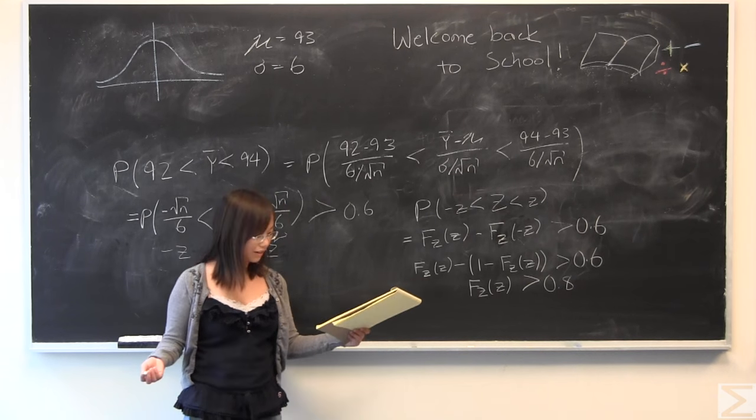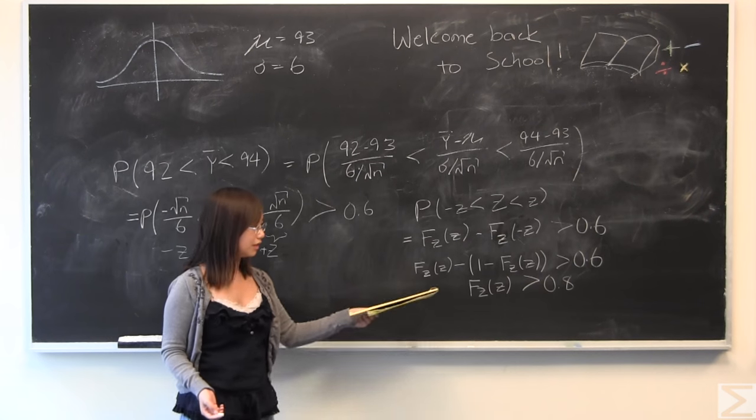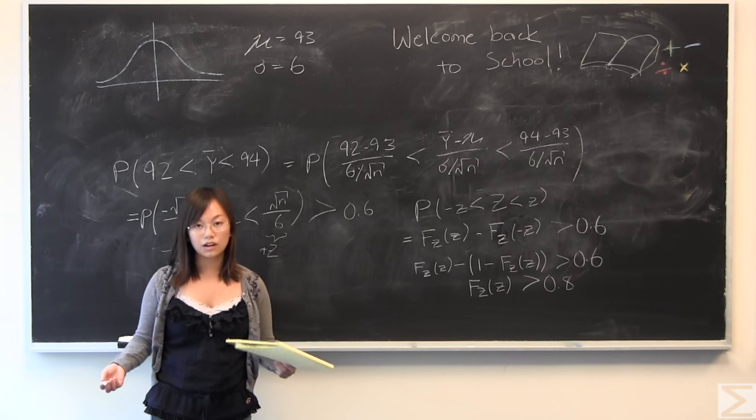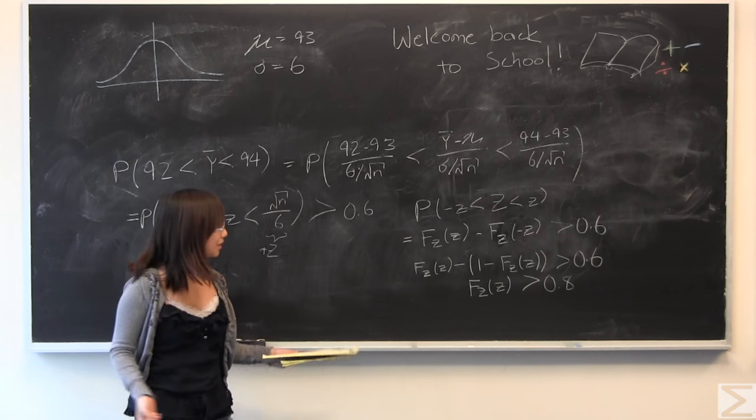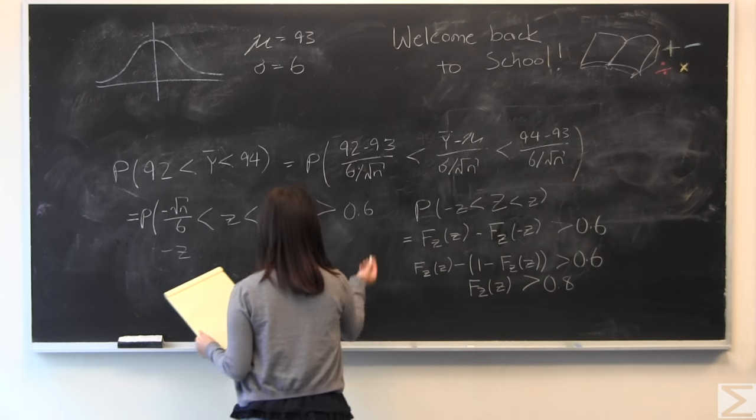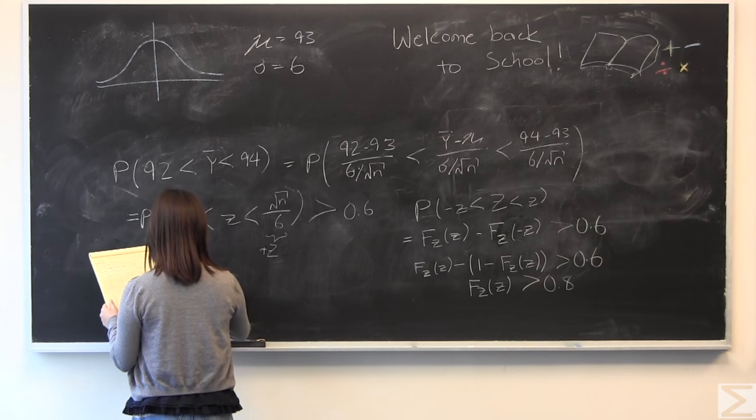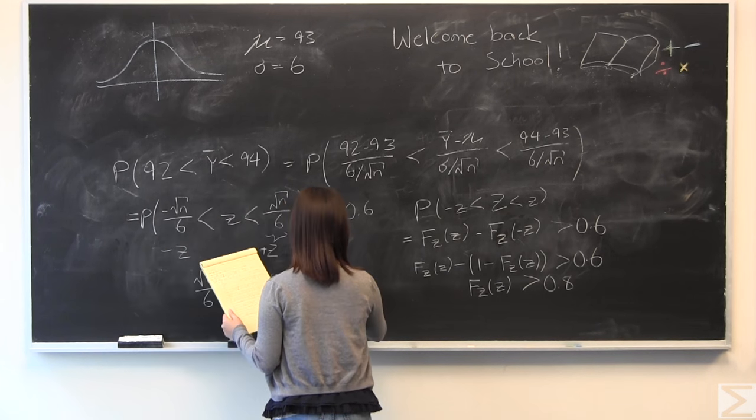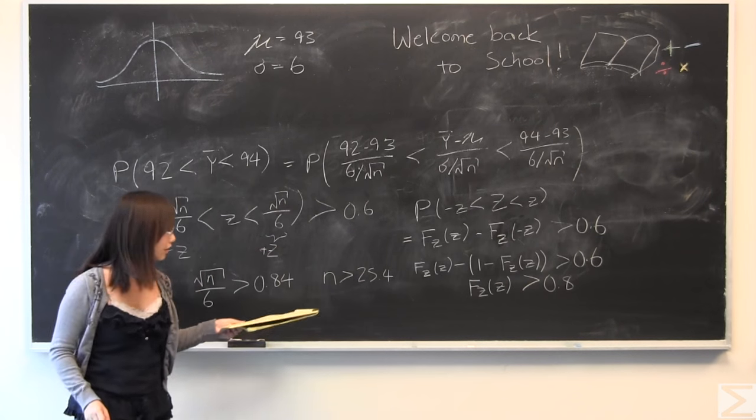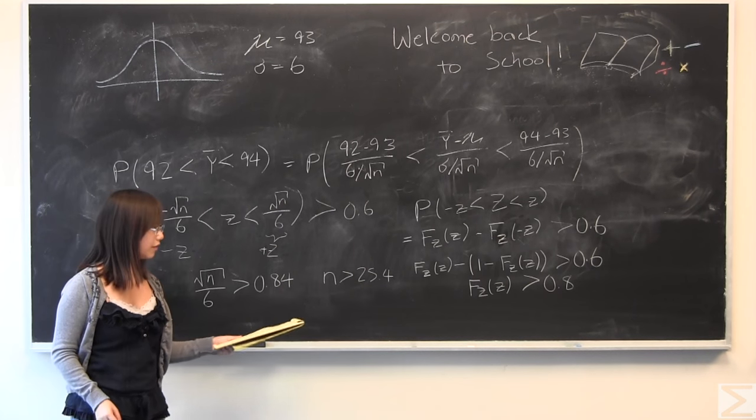When is the area of this curve going to be equal to 0.8? We consult our z-table and find that's going to happen when little z is greater than 0.84. So if we have little z equal to 0.84, we can just solve for n in that case. I'll write that down. Solve for n, get that n needs to be greater than 25.4.